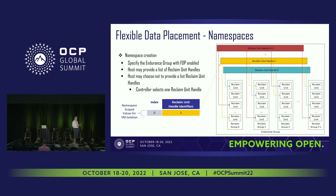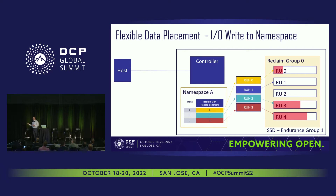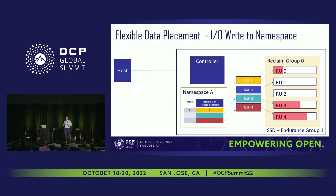Let's walk through a command. I have an SSD here, and for simplicity I have one reclaim group with a bunch of reclaim units. I've numbered the reclaim units only for this presentation — in the protocol, reclaim units are not numbered to the host. The host doesn't know how many there are, their number, or the actual physical location of the NAND, other than the reclaim group. I have reclaim group 0 and four reclaim unit handles, RUHs, that the controller is providing in this particular FDP configuration.